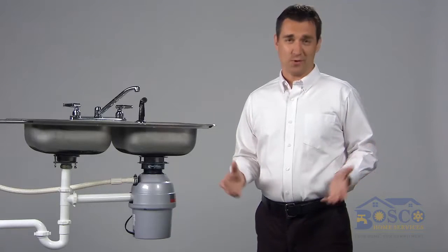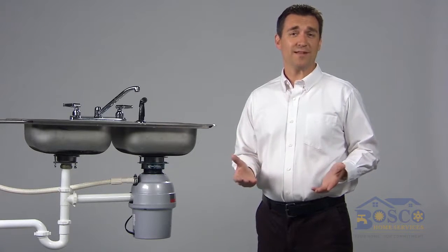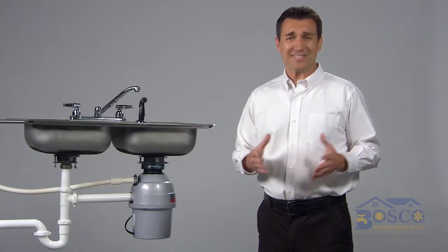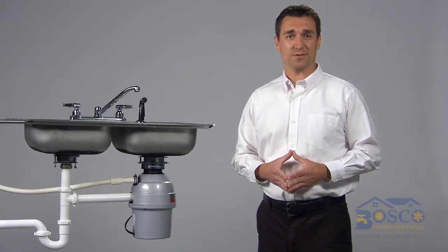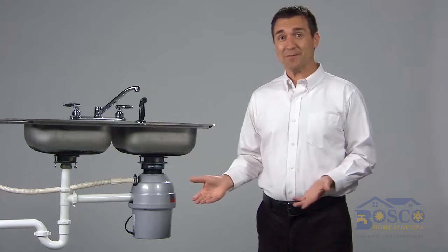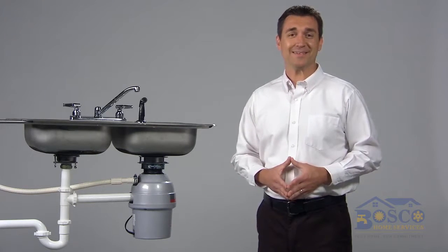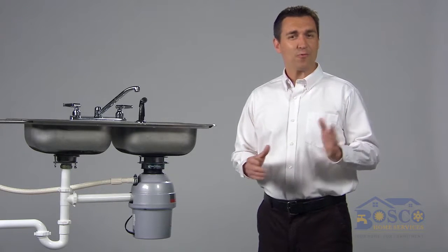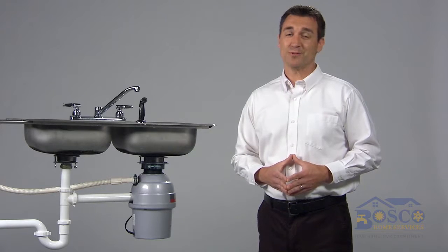A slow kitchen drain is annoying, and if ignored will most likely get worse. The main reason kitchen drains back up is all the stuff people put in their garbage disposals. You might say, isn't it the job of the garbage disposal to grind up kitchen waste? Well yes, but that doesn't mean it will all go through the pipe. Here are three common things your garbage disposal doesn't like.